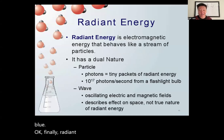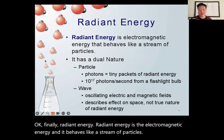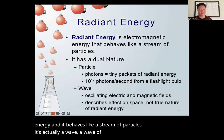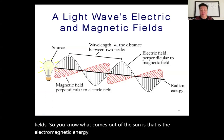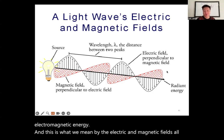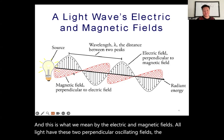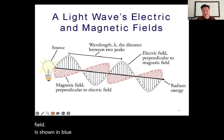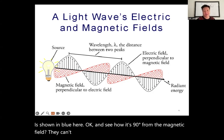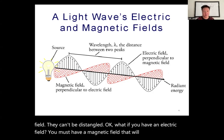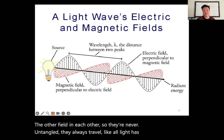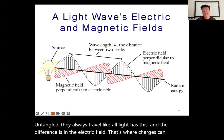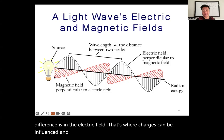Radiant energy is electromagnetic energy that behaves as a wave of oscillating electric and magnetic fields, perpendicular to each other at 90 degrees. You can never have one without the other — an electric field always induces a magnetic field. The electric field influences charges; the magnetic field influences magnets. Sunlight is an example of electromagnetic energy.